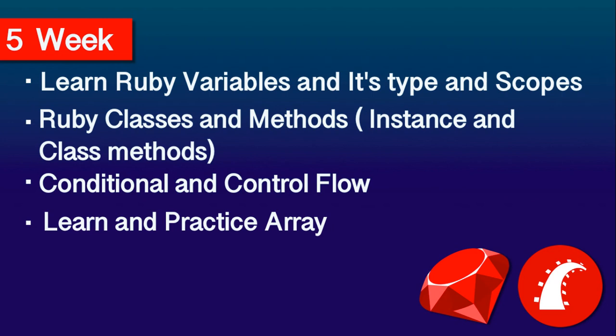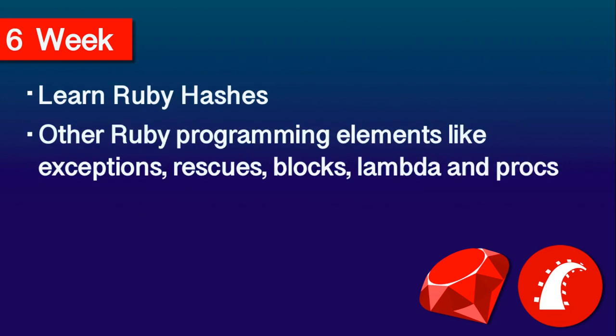In the sixth week, you need to cover Ruby hashes and other Ruby programming elements like exception handling, rescue, blocks, lambdas and procs. Start with learning Ruby hashes — just like arrays, hash is also an important data structure in Ruby. It overcomes some disadvantages of arrays and will be used most often in Rails when dealing with strong parameters, request body, response body and so on. Just like arrays, give a couple of days and at least six hours every day, and practice as much as you can.